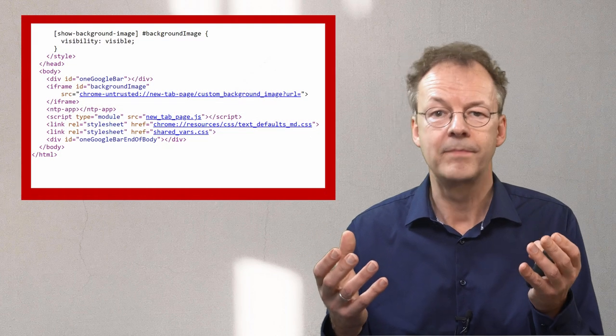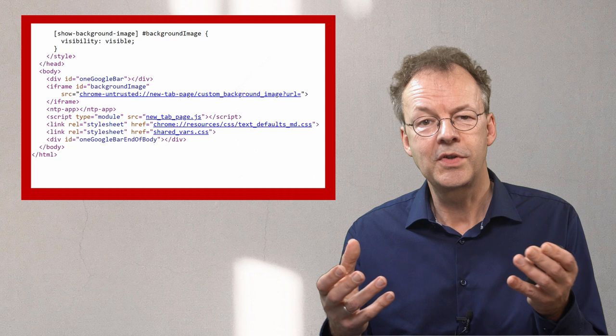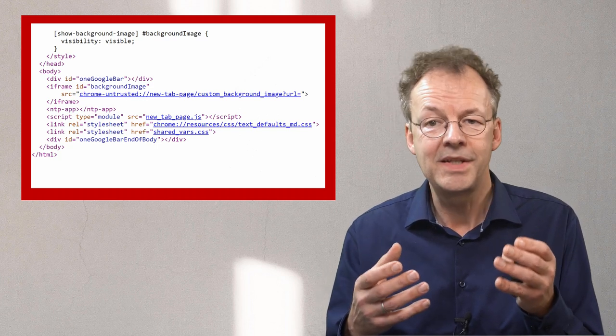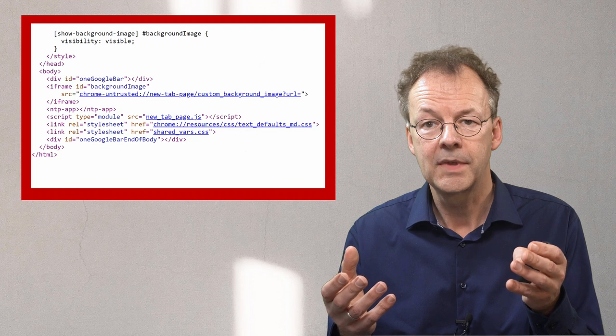In a more advanced form robotic process automation uses knowledge about the application it's operating on. And many applications are web-based. So robotic process automation can directly select HTML elements in the browser. Robotic process automation can also directly interact with Word or Excel sheets for example.